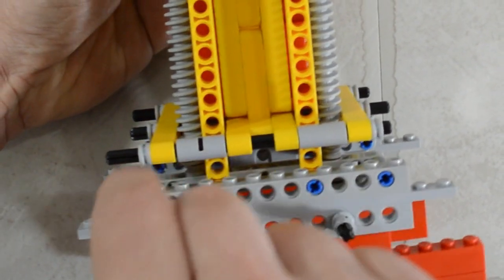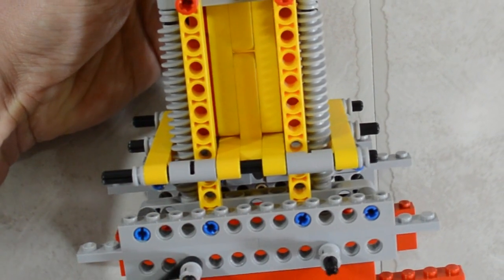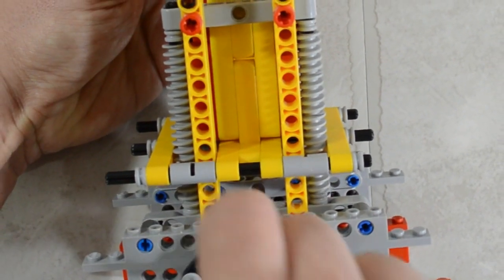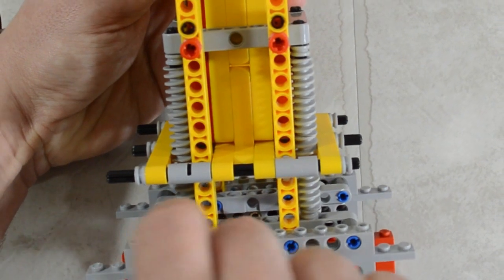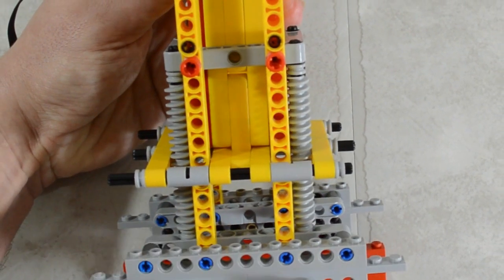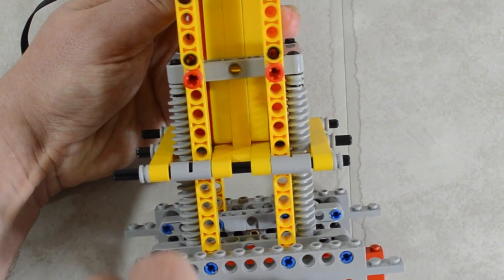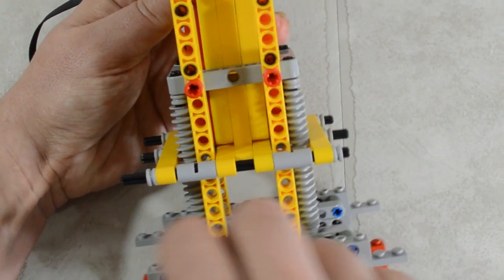So as we turn the hand crank counterclockwise, you can see the platform raising, and of course vice versa.